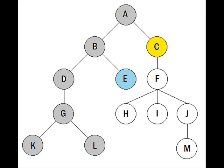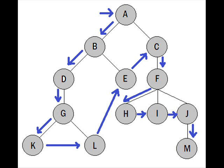Node A has node C left unvisited, so we go to C. Having no other option, we go to its child node F. Node F has three child nodes. Starting from the leftmost, we visit node H, then backtrack to F and go to node I. We backtrack to F again since I has no children, then visit node J. J has only one child, so we visit node M. After visiting M, we backtrack to J, then to F, then to C, and finally back to the root, verifying that no nodes are left unvisited.